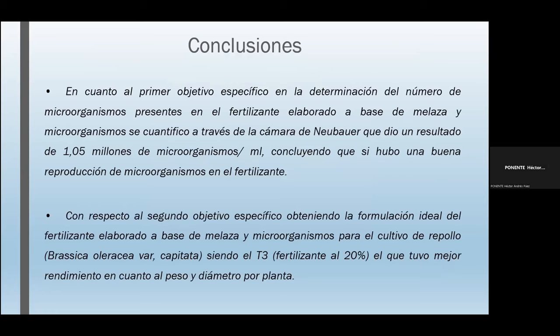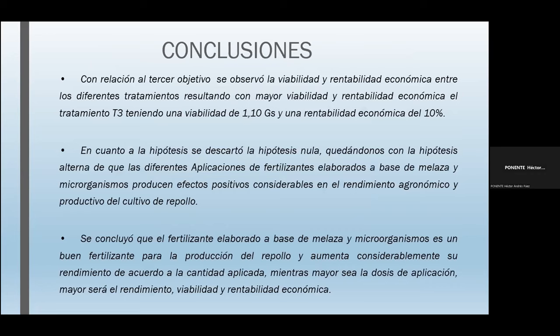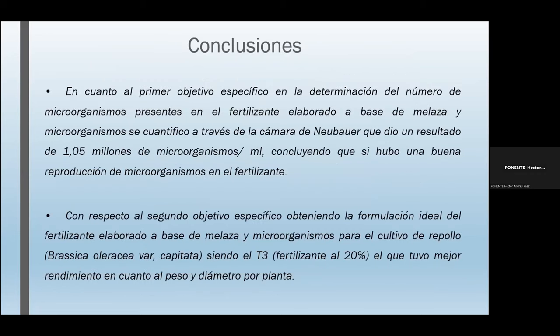En cuanto al primer objetivo específico, se cuantificó el número de microorganismos a través de la cámara de Neubauer, dando un resultado de 1,5 millones de microorganismos por mL, concluyendo que hubo una buena reproducción de microorganismos en el fertilizante. Con respecto al segundo objetivo específico, el fertilizante elaborado a base de melaza y microorganismos para el cultivo del repollo en el tratamiento 3 —al 20%— tuvo el mejor rendimiento en peso y diámetro por planta.